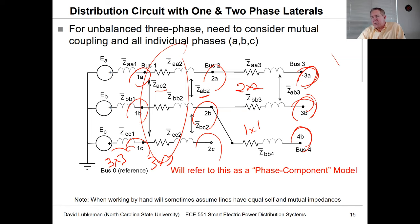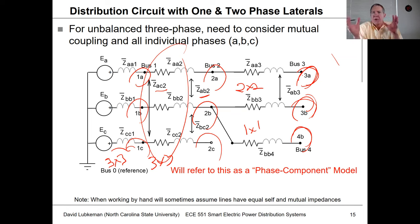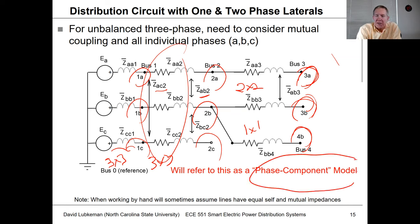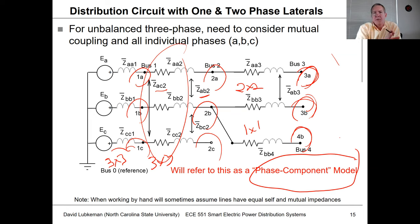This phase component model is what we need for distribution. For transmission, we can use symmetrical components because we always have three phases at each bus — but that's not the case for distribution.